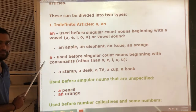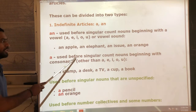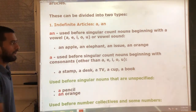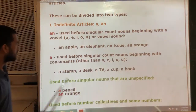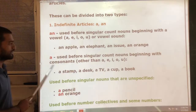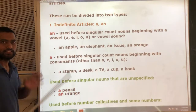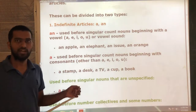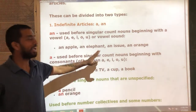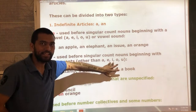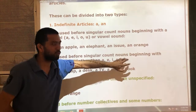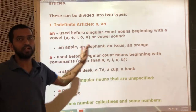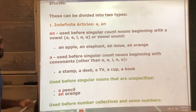The second article is 'a'. A is used before singular nouns beginning with consonants. What are consonants? The letters which are other than A, E, I, O, U — meaning, excluding those five vowel letters, the remaining letters are consonants.